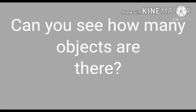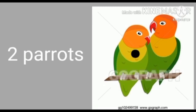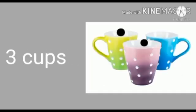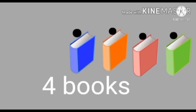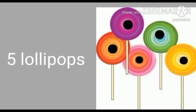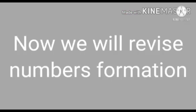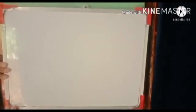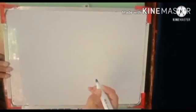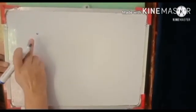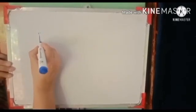Can you see how many objects are there? Now, we will revise number formation. Look at this. I am going to tell you the formation of numbers. This is our whiteboard. I am going to put the starting point. Put your marker on the starting point. 1 is down and down.